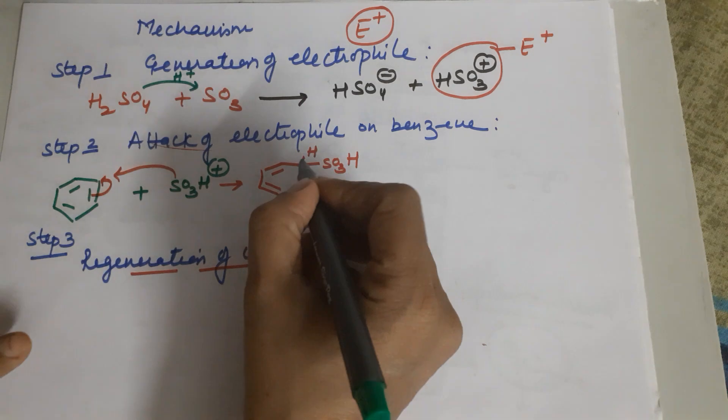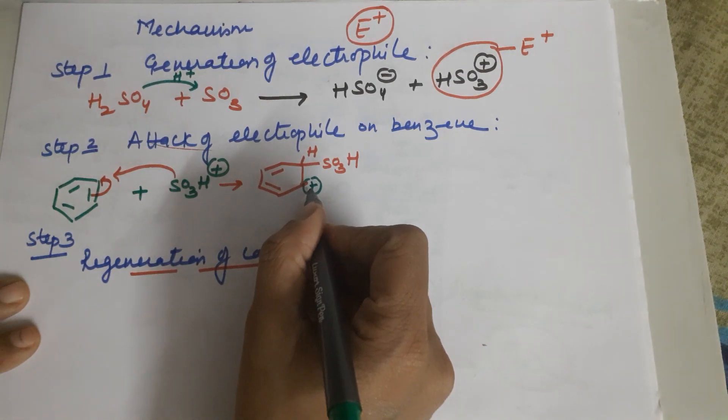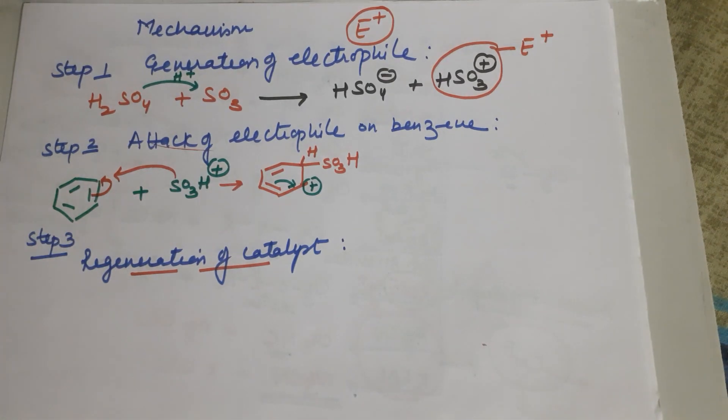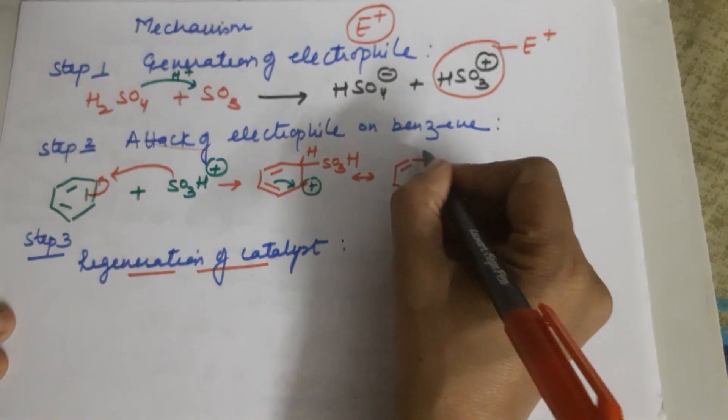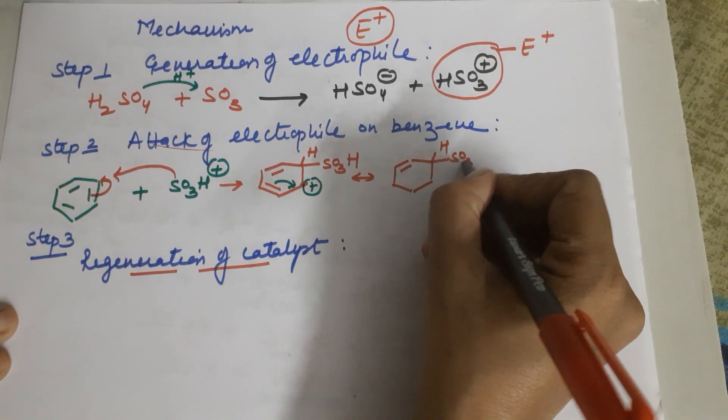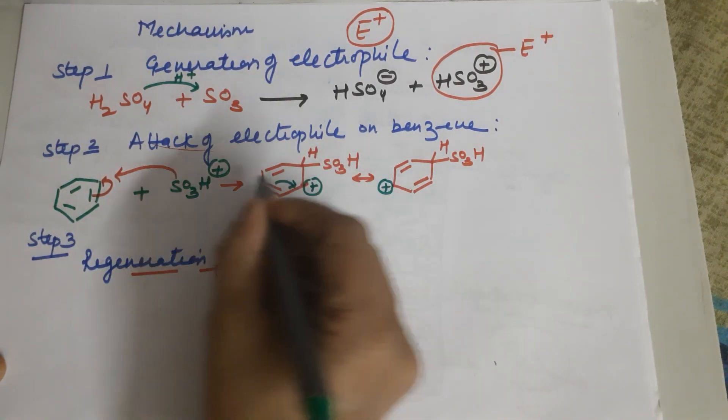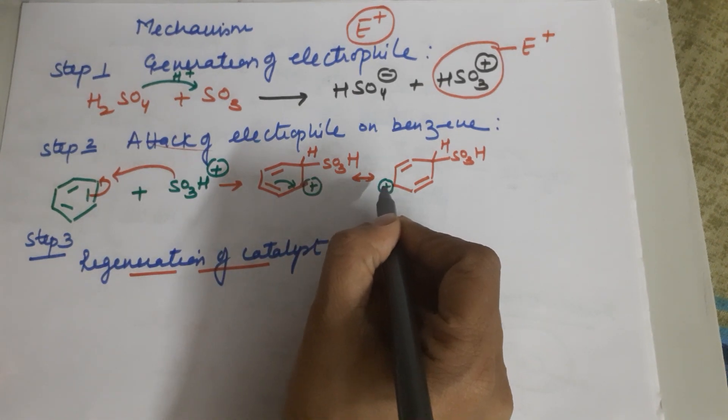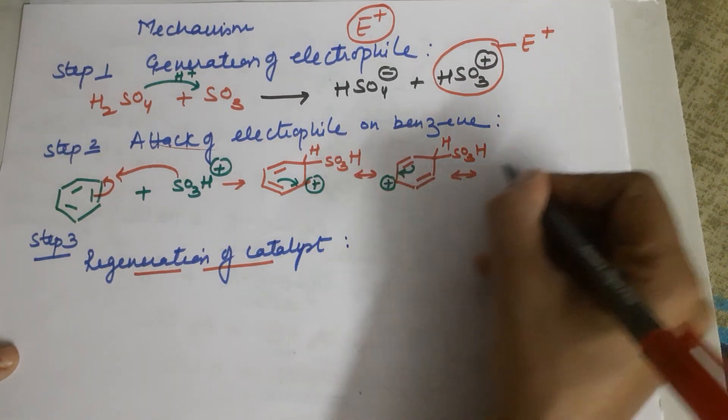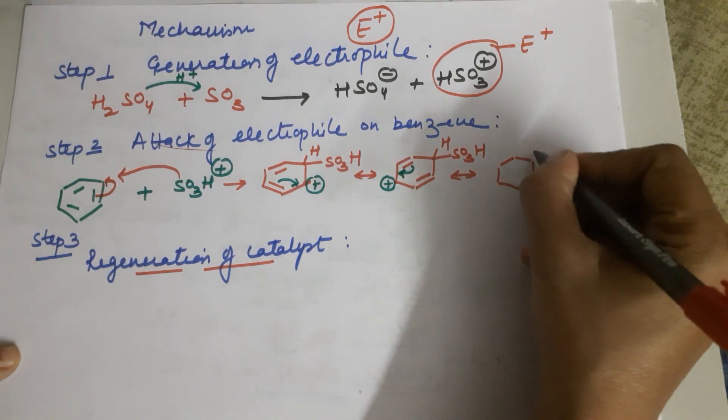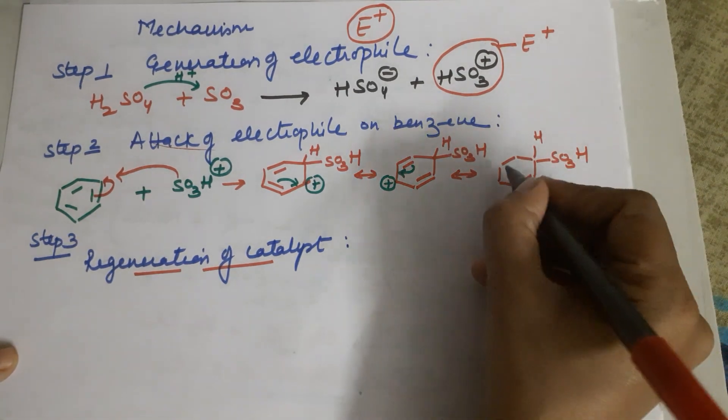Next step, during resonance if this electron goes here, you get a positive charge. This particular carbon is positive because this electron moved. Now this pulls the electron from here, the pi electron cloud moves here leading to the formation of the next resonating structure with the bond shifting here.